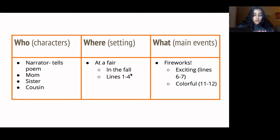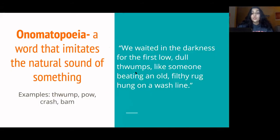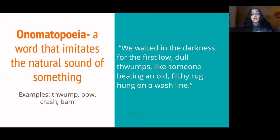Before we move on, let's talk about the word in italics — 'thwumps.' Thwumps are an onomatopoeia, which is a word that imitates the natural sound of a thing — basically sound effects. Other onomatopoeias are like pow, kaboom, or crash. In this case, the word was in italics because it was an onomatopoeia, but in general, italics just means an author is emphasizing a word and wants you to put a little extra stress on it. In the next stanza, you'll see that italics aren't only used for onomatopoeias. If you don't know that word, pause and write it down.